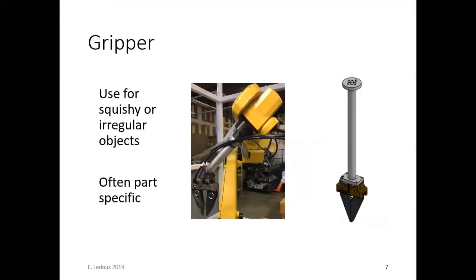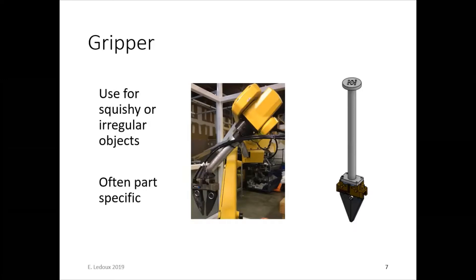Finally, a gripper is used for squishy or irregular objects. Usually the gripper is part specific. So the amount that it opens and closes will be large enough to fit around the part, but small enough that it will still get on but then not squish all the way. Because you don't want the gripper to pinch so hard that it snaps your object.